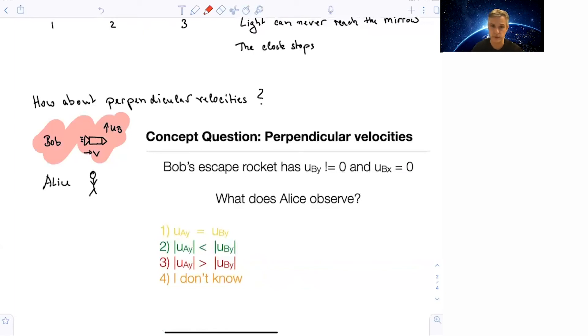We do this as a concept question. Which of the four answers is correct? Is the velocity unchanged because we are studying perpendicular velocity? Is the velocity smaller, larger? Or you don't know because we actually have to figure it out, work it out.